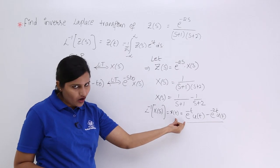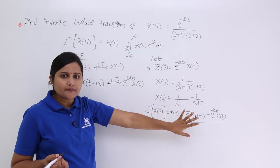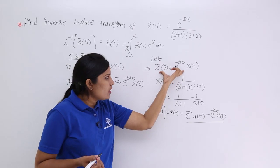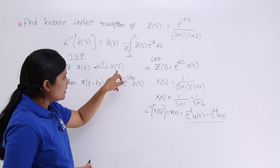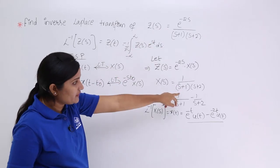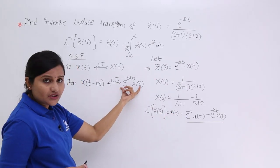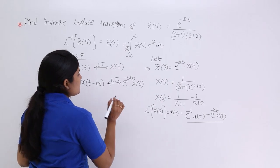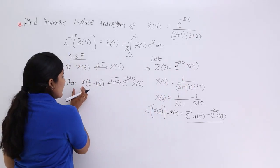We found X(T), but we do not want just X(T). We got the inverse Laplace transform of only one part of the given spectrum, but we want the total signal transformed into the time domain. So here I want to apply the time shifting property. We have X(S), we found X(T), and now they have given us the shifted transform e^(-2S)·X(S).